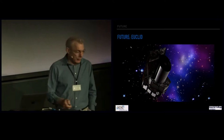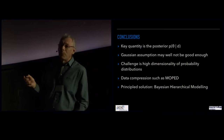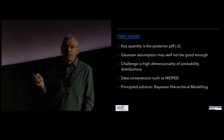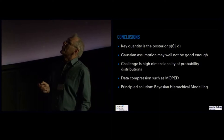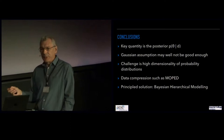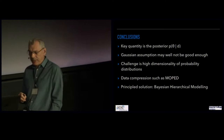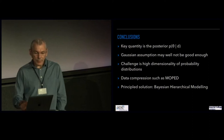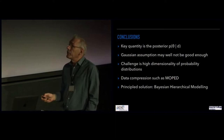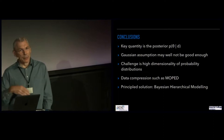To summarize: the key quantity in all of this is the posterior — it essentially encompasses everything you've learnt from the experiment. The Gaussian assumption for the data might not be good enough. The challenges we face are that the probability distributions we need to deal with are extremely high-dimensional, and it's not at all clear that we can assume we know the structure of these distributions for complicated data sets. You can do something about that by using massive data compression methods, or by using a Bayesian hierarchical model, which allows you to analyze things from beginning to end in a principled way.